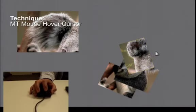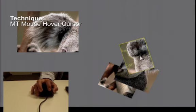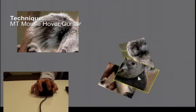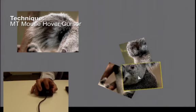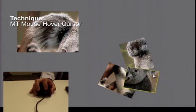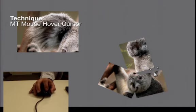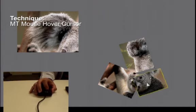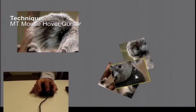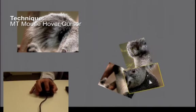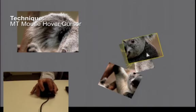With the MT Mouse Hover Cursor technique, touches manipulate only the object under the mouse cursor. Touches that appear off the object still affect the currently selected object. To move an object at least one touch is required. Two or more contacts are required to scale and rotate.